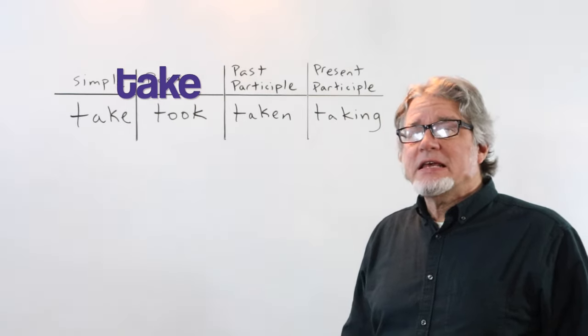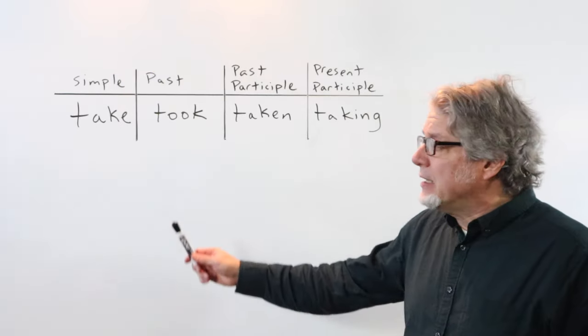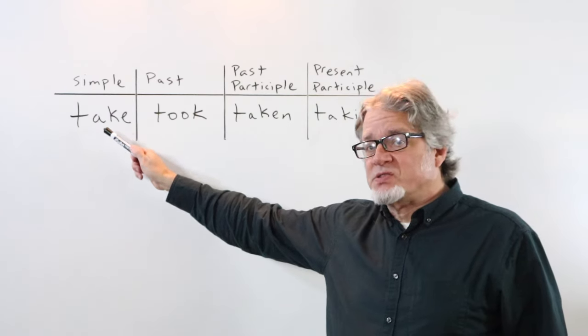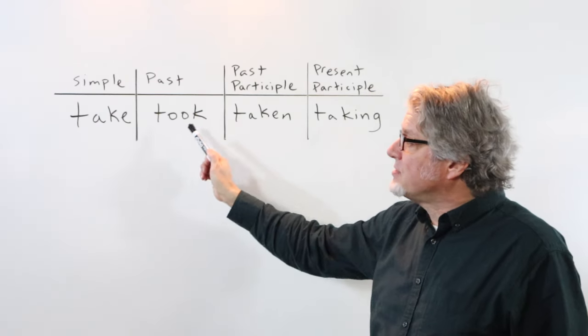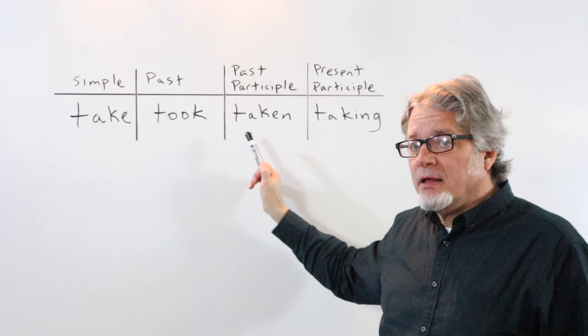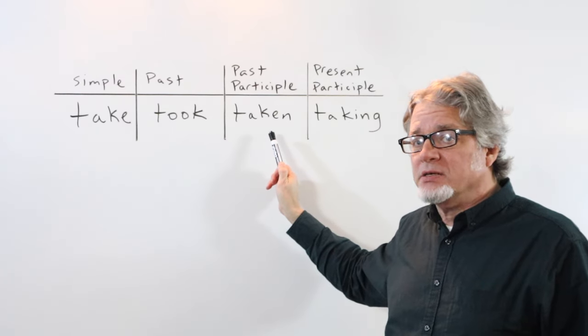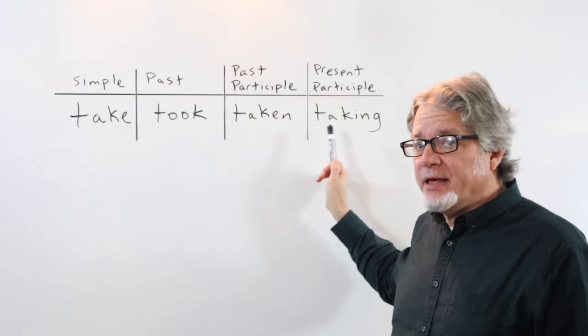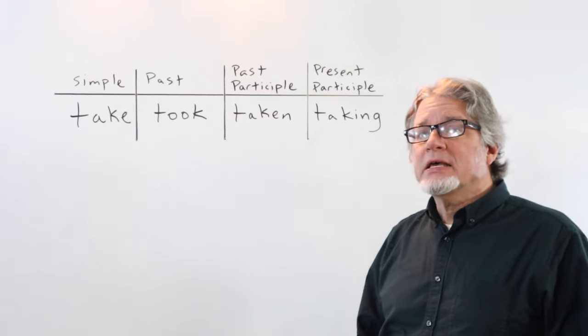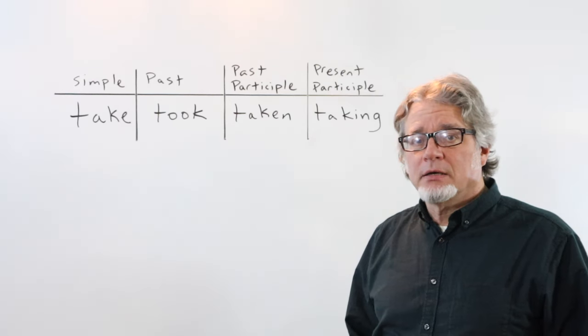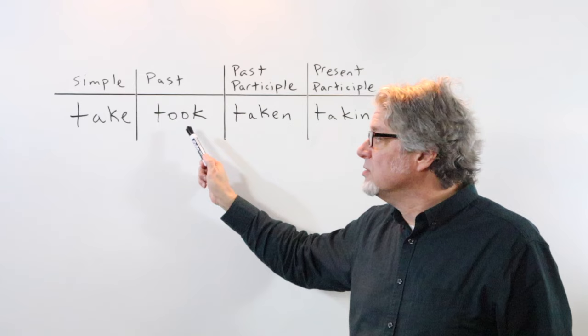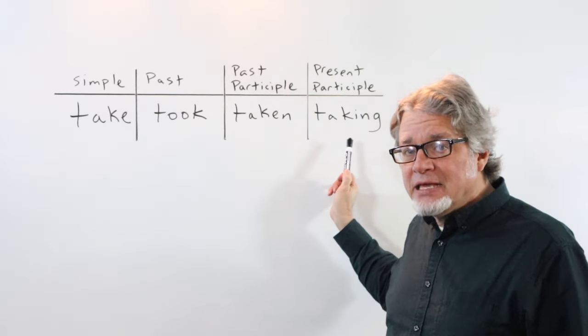The verb take is an irregular verb. In the simple form, it's take. The past tense is took. The past participle is taken, and the present participle is taking. Take, took, taken, taking.